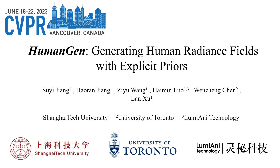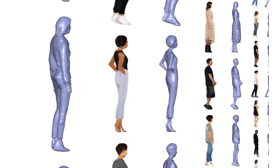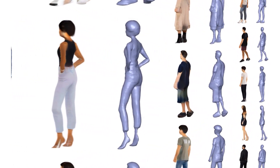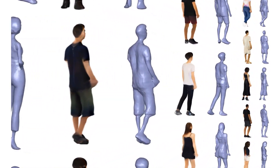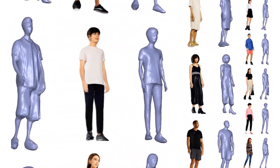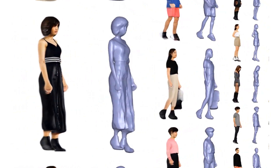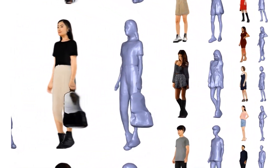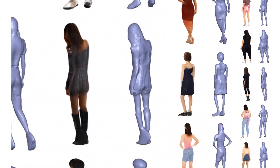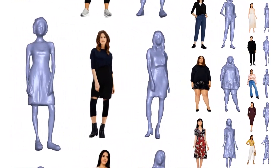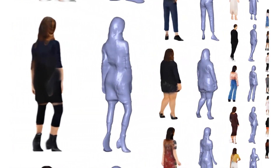We have presented a novel 3D human generation scheme with detailed geometry and 360-degree realistic free-view rendering. Our method, HumanGen, learns to generate high-quality radiance fields for 3D humans from 2D images. In stark contrast with existing methods that only use simple priors, our approach explicitly utilizes richer priors from top-tier 2D generation and 3D reconstruction schemes.